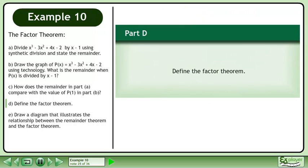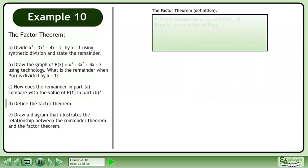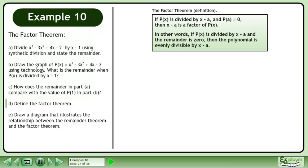In Part D, we'll define the Factor Theorem. If p is divided by x minus a, and p at a equals 0, then x minus a is a factor of p. In other words, if p is divided by x minus a and the remainder is 0, then the polynomial is evenly divisible by x minus a.